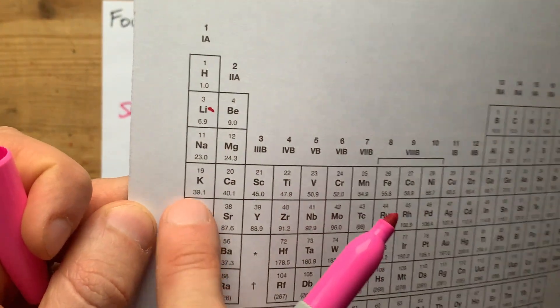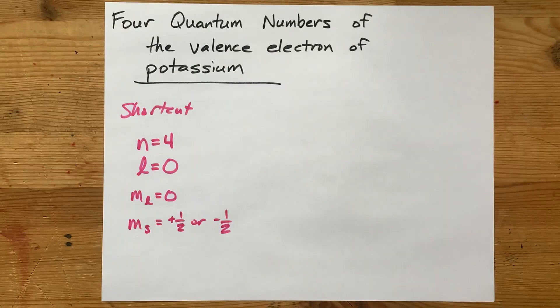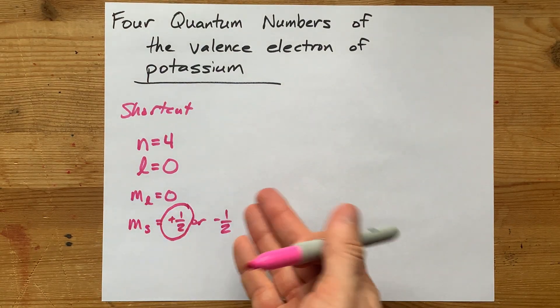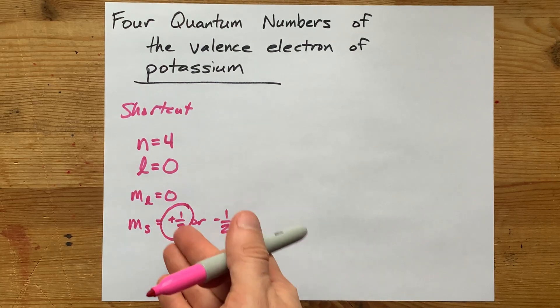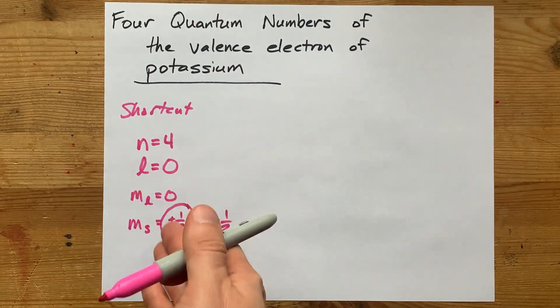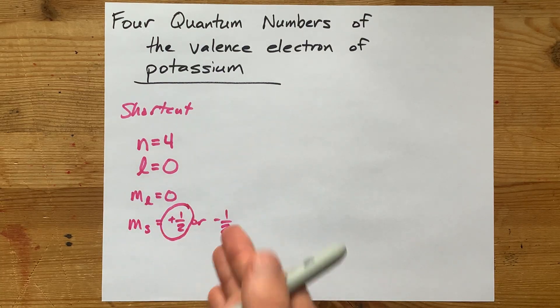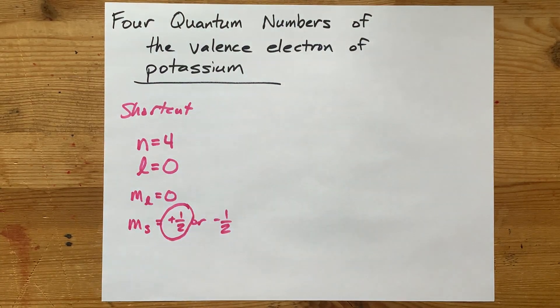Potassium is the very first element of those two. So I choose positive 1 half, which is what I personally use for the lowest state electron. N equals 4, L equals 0, ML equals 0, and MS equals plus 1 half are my four quantum numbers. There you go.